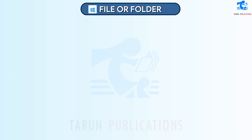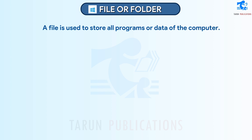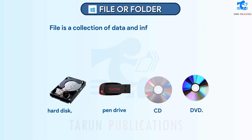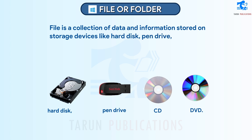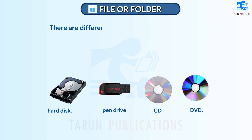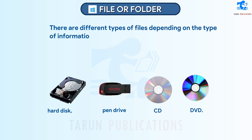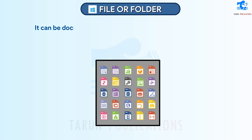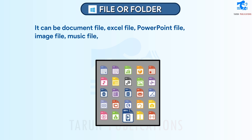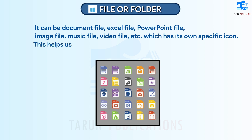File or Folder. A file is a collection of data and information stored on storage devices like hard disk, pen drive, CD, or DVD. There are different types of files depending on the type of information they store. It can be a document file, Excel file, PowerPoint file, image file, music file, video file, etc., each with its own specific icon. This helps us in identifying the file just by looking at the icon.